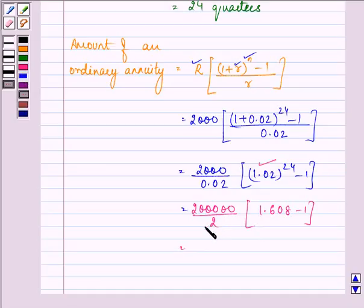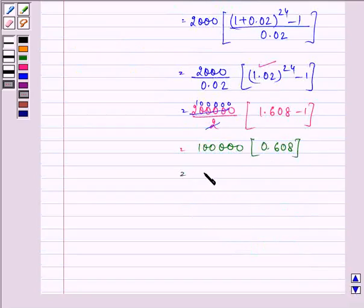So on using it and simplifying it, we have 0.608 getting multiplied, and we have the answer as 60,800.